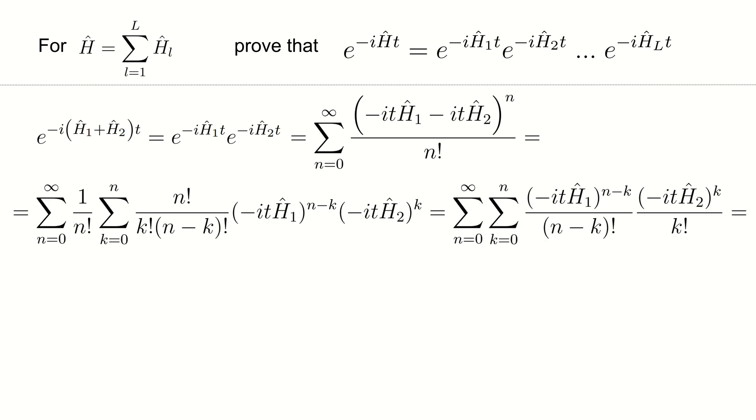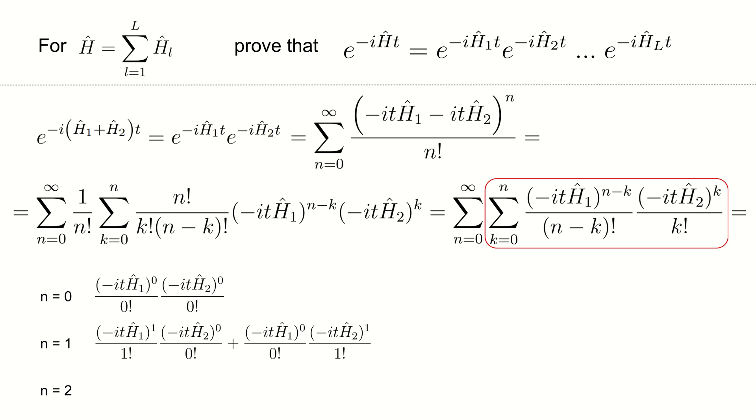For the next part of the proof, let's have a look at the terms in the inner sum for each n. For n equal to 0, it is just a single term because k is equal to 0 and n minus k is also equal to 0. For n equal to 1, k is 0, 1 and n minus k is 1 and 0 correspondingly. Then we do the same for n equal to 2.